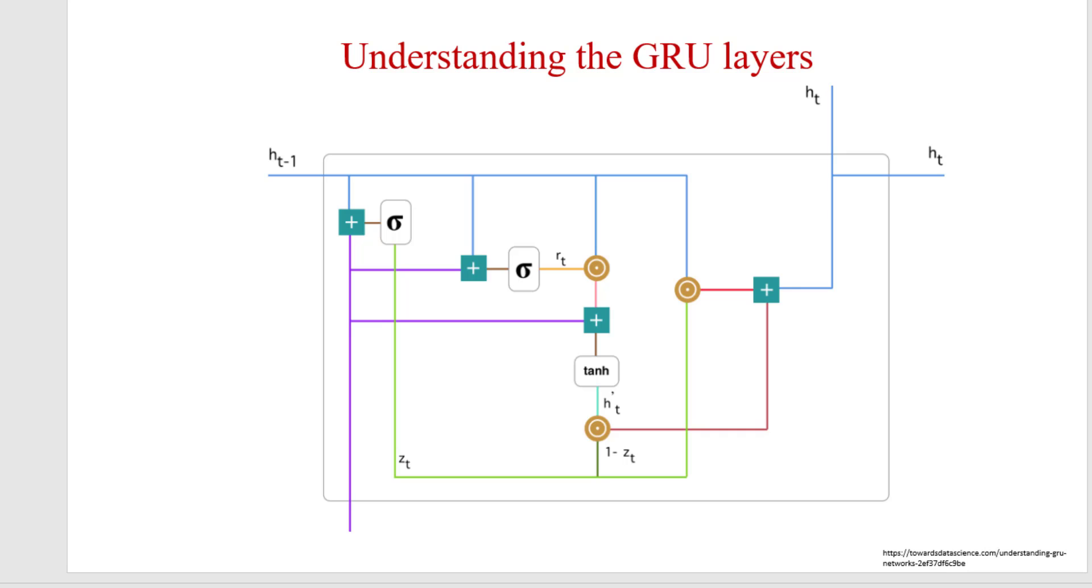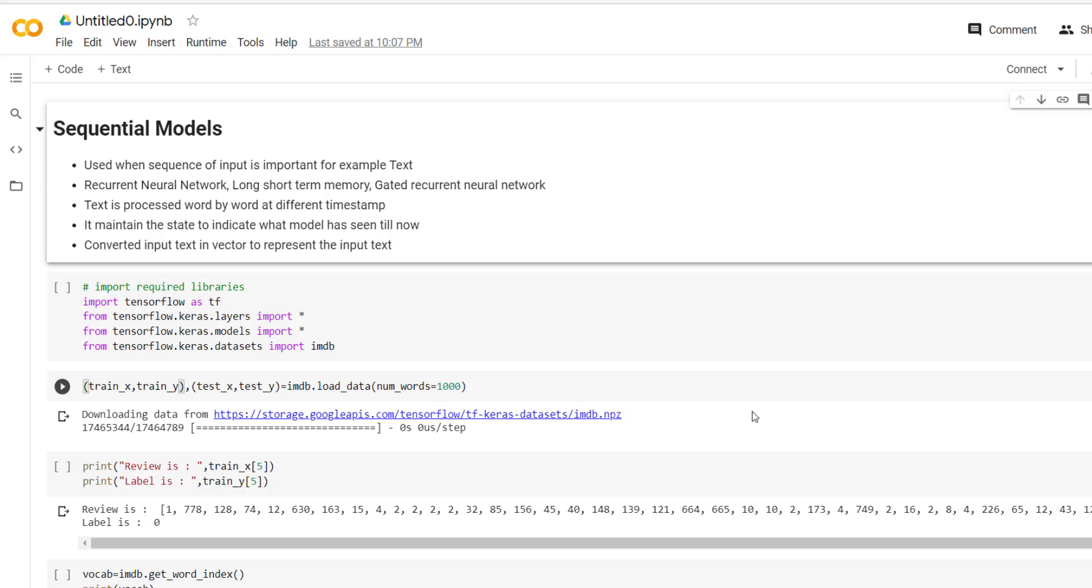So let's understand how to use this GRU in TensorFlow 2.0 models with the help of coding tutorial. We are going to continue with the same example that we have used in simple RNN. In simple RNN we have used IMDB dataset for identifying sentiments of movie review. So we are going to continue with the same example.